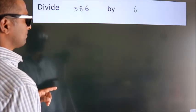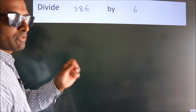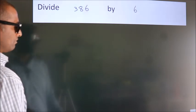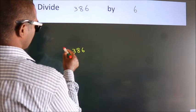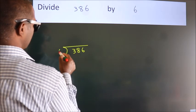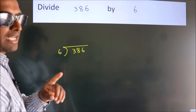Divide 386 by 6. To do this division, we should frame it in this way. 386 here, 6 here. This is your step 1.